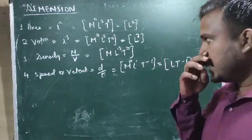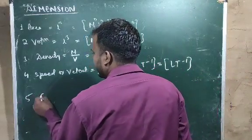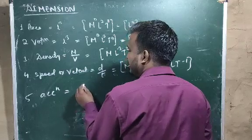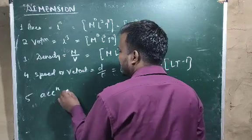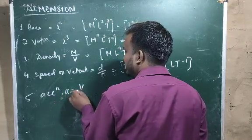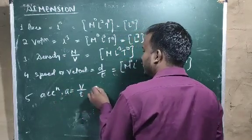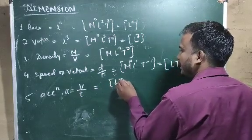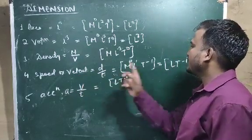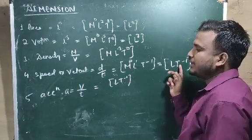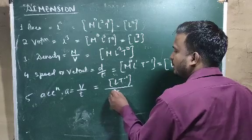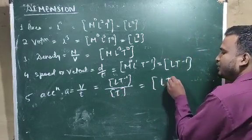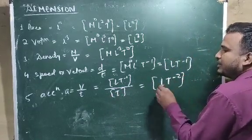Now let us see the dimensional formula for acceleration. Acceleration A equals velocity divided by time. The dimensional formula for velocity is L T⁻¹ and for time is T, so the result will be L T⁻².